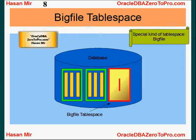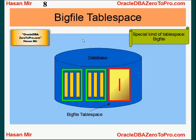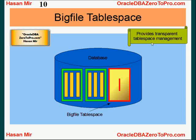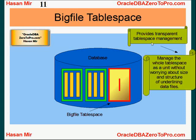Let's talk about a special kind of tablespace called a bigfile tablespace. In 11g onwards you can create a bigfile tablespace. What's special about it? The maximum size can go up to 128 terabytes — about 131,000 gigabytes. It provides transparent tablespace management to DBAs, so once you group all the files into a bigfile tablespace you can treat the whole tablespace as one unit without worrying about the size and structure of underlying data files.